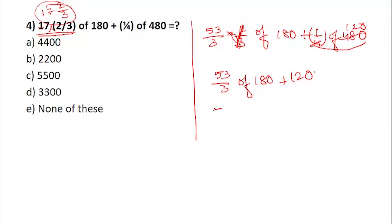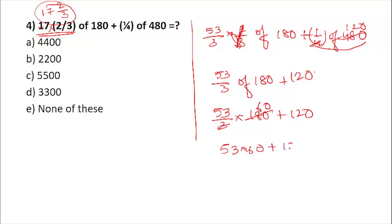Remove 'of' and replace with cross multiplication: 53/3 × 180 = 53 × 60 = 3180. Now, 53 × 6: 3 × 6 = 18, carry 1; 5 × 6 = 30 + 1 = 31. So 53 × 60 = 3180. Adding 120 gives 3300. The answer is option D.